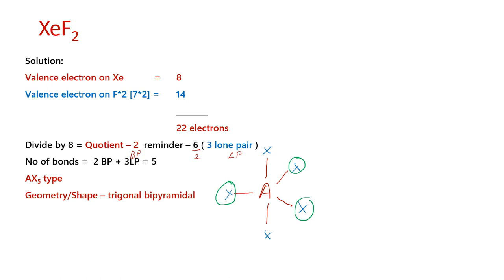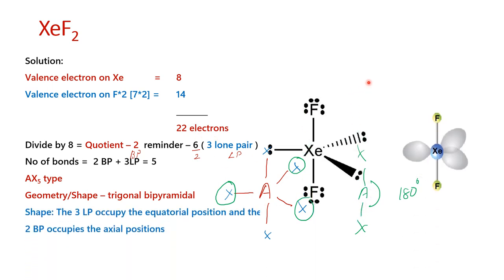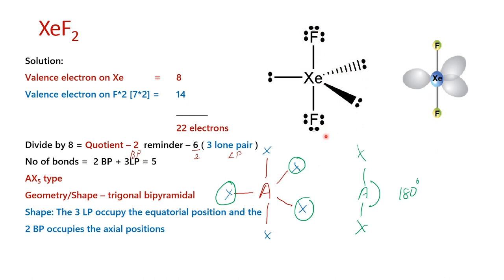If there is 1 lone pair, the shape will be like a seesaw. If there are 2 lone pairs, the shape is T shaped. If there are 3 lone pairs, the shape is linear. The bond angle is 180 degrees. Though the base type is AX5, because of the presence of lone pair of electrons as per VSEPR theory, this particular molecule has a linear shape and this is how xenon difluoride looks.